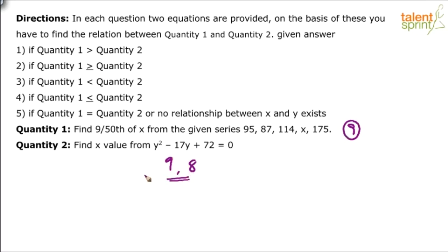So 9 and 8, and x is equal to y. So basically there are two comparisons: x with y1 and x with y2. Only one value of x with two values of y. So if we compare 9 with 9, what do we get? x is equal to y. If you compare 9 with 8, what do we get? x is greater than y. So overall, it is x greater than or equal to y. So answer should be what? Quantity 1 is greater than or equal to quantity 2. Option 2, right?